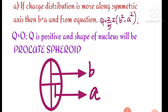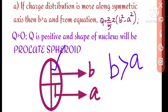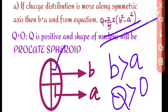First possibility: the charge distribution is elongated along the symmetric axis, meaning b is greater than a. In this case, b squared minus a squared is positive, so Q is greater than zero — a positive quantity. This shape is called a prolate spheroid.